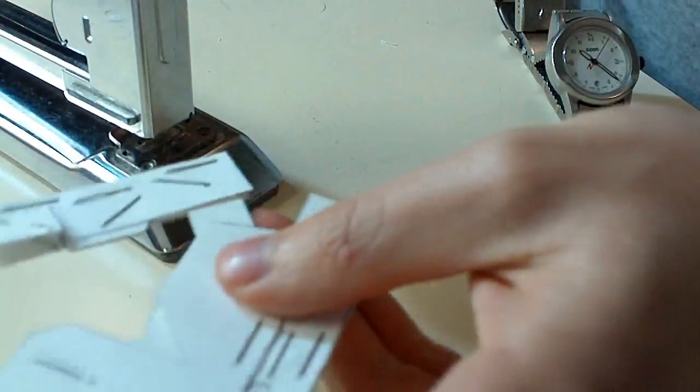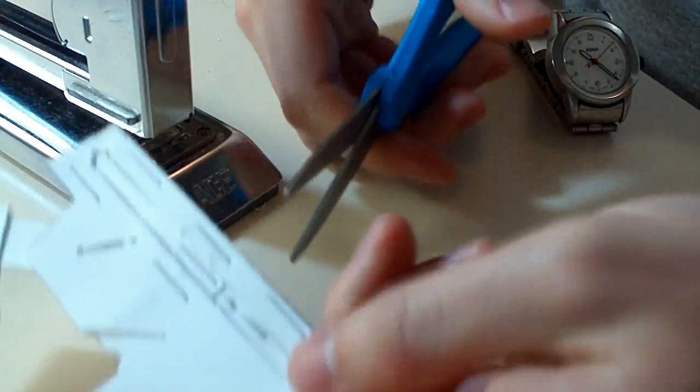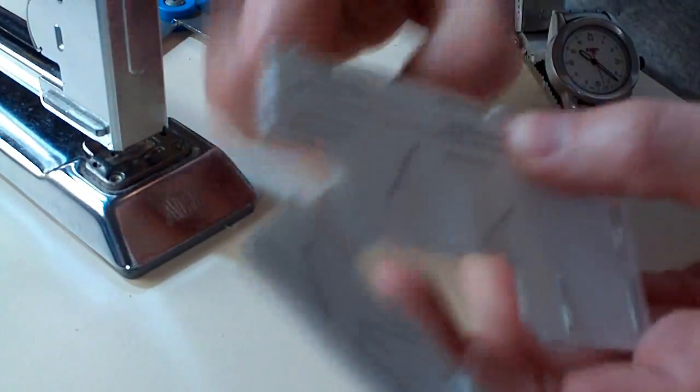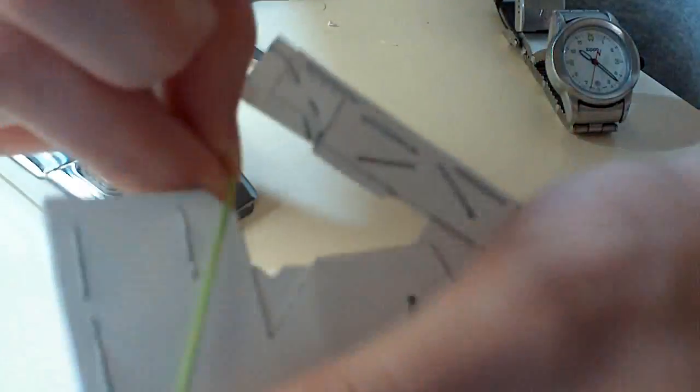And add the rubber band. Oh, sorry, forgot to cut the rubber band notch on the bottom here. Just a little V-notch like we did in the arm. Now you can add the rubber band.